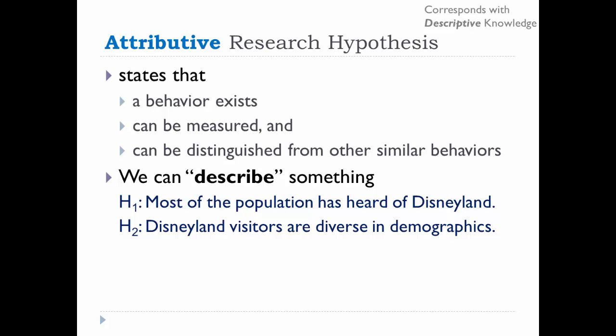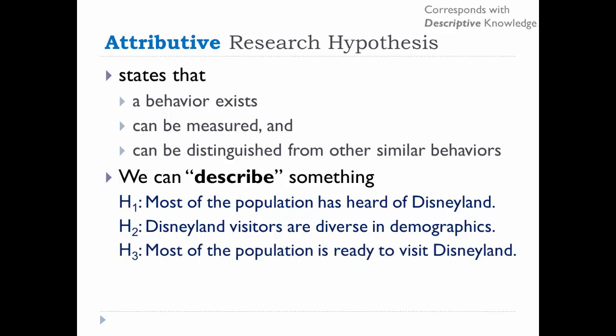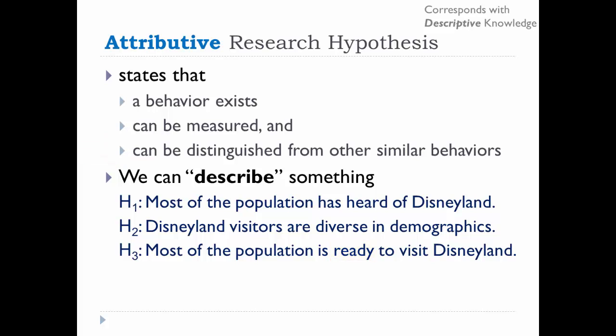Now let's consider this alternative attributive research hypothesis: most of the population is ready to visit Disneyland. This meets the first criterion of a behavior existing, and perhaps the second that it can be measured. But look at the term 'ready' — what does that mean? Does it mean they are ready as in able to visit Disneyland, or ready as in a state of mind? Readiness to visit Disneyland, as worded, can't be distinguished from other similar behaviors, making it a poor attributive hypothesis.